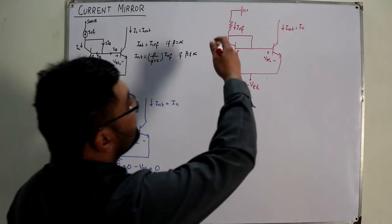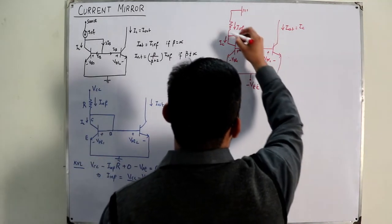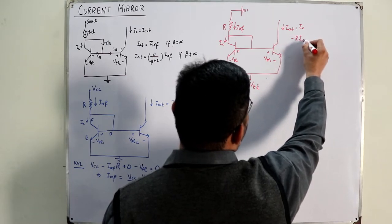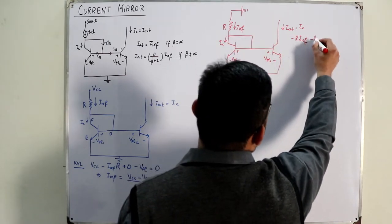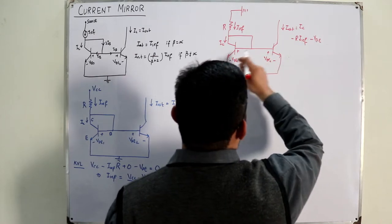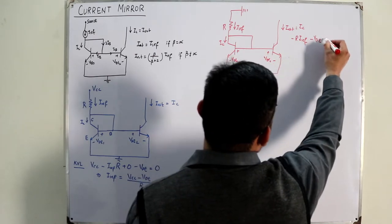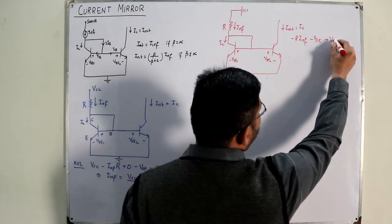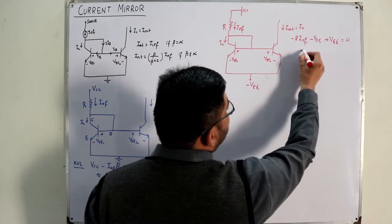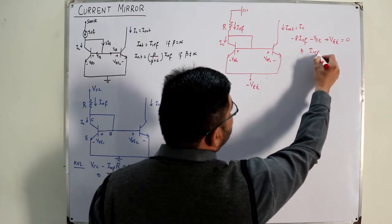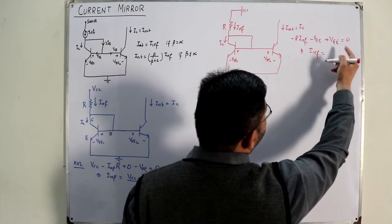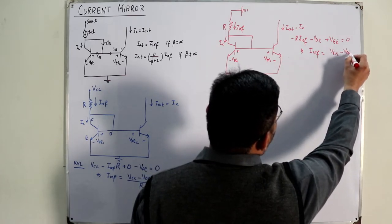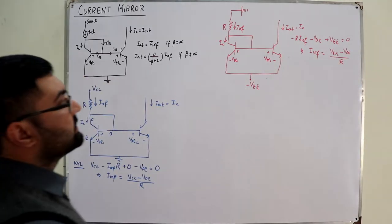Applying KVL for this second scheme: minus R times I_reference, minus VBE, equals minus VEE. Rearranging with plus VEE on the other side gives: I_reference = (VEE − VBE) / R.